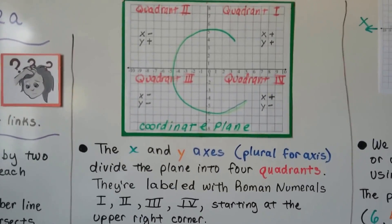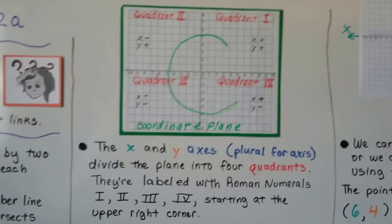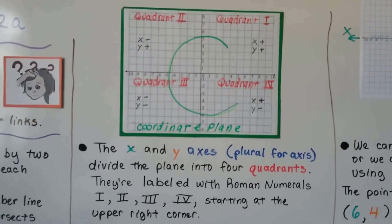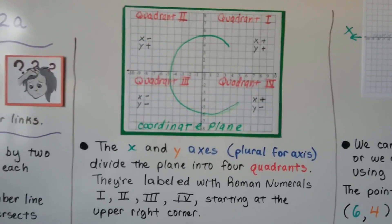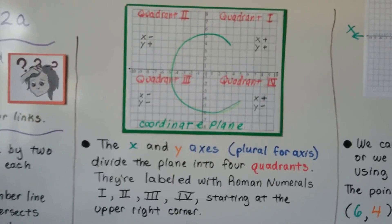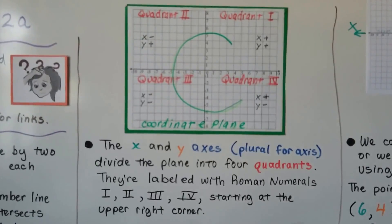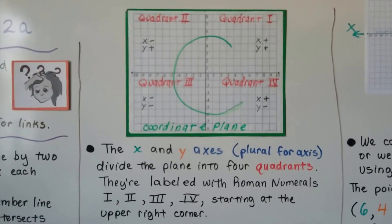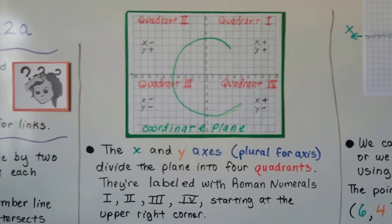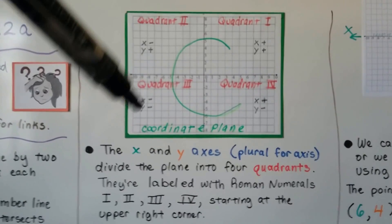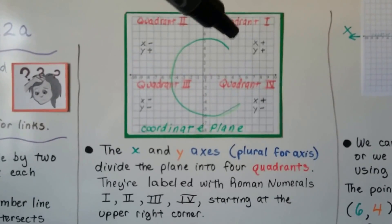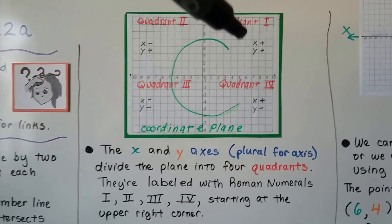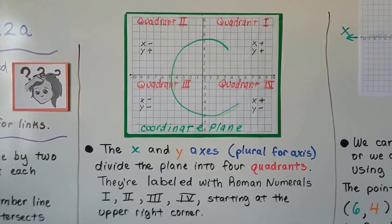The x and y-axis, that's plural for axis, divide the plane into four quadrants. And they're labeled with Roman numerals one, two, three, four, starting at the upper right corner. I always tell everyone you can remember which quadrant is which because it makes the shape of a C for coordinate plane, coordinate grid. It starts here, then goes to two, three, four.